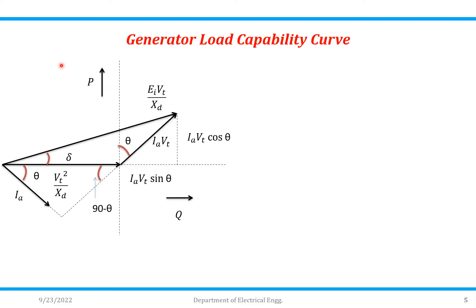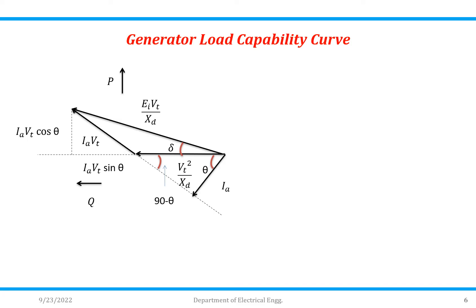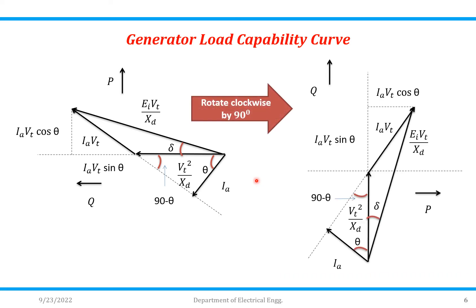Now, we take the mirror image of the previous diagram. Then, in the next step, we rotate this mirror image in a clockwise direction by 90 degrees. So we will get the resulting diagram, which we are using as the generator load capability curve.